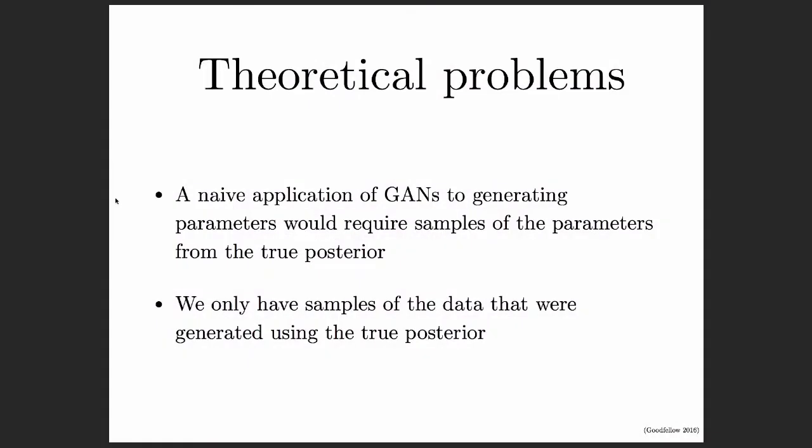There is also a theoretical problem. If we wanted to apply generative adversarial networks naively to generate parameters, we would actually need positive examples of samples from the posterior over parameters. So we can't just take the existing framework and use it directly. We can think about how to take the principle of density ratio estimation and use that to bootstrap the training process. I don't have a complete answer here — the goal of my talk is to get people thinking about this idea, and I can show some of the directions I've explored without having actually reached a complete solution.